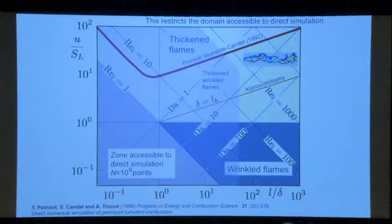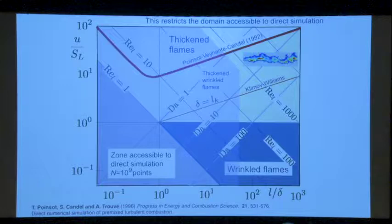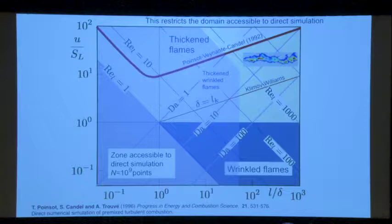Here L over delta is the size of the large scales divided by the thickness of the flame, and U prime over S_L is the turbulence intensity relative to the burning velocity. What is accessible with DNS calculations is only a limited region — that is a fundamental limitation. DNS allows you to look at many interesting problems, but certain regions of interest remain inaccessible.